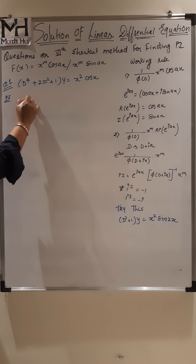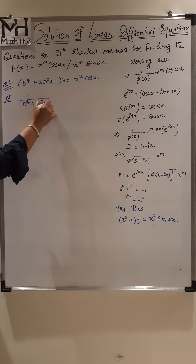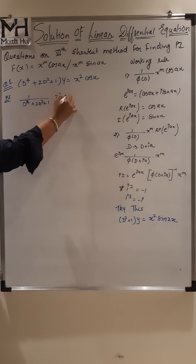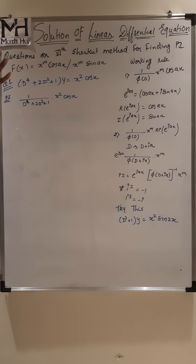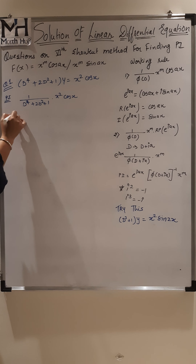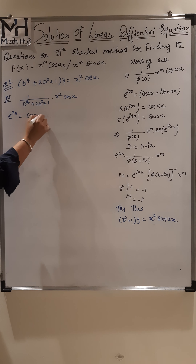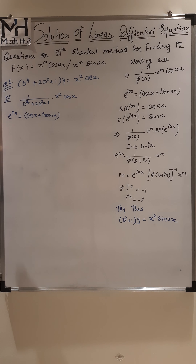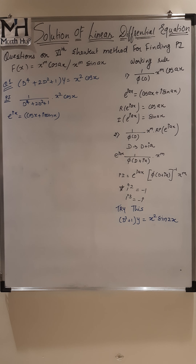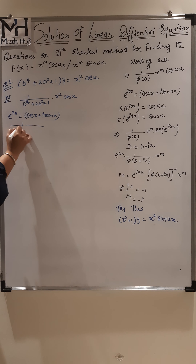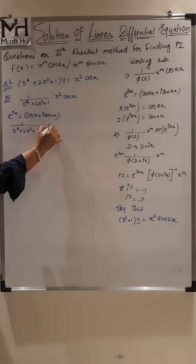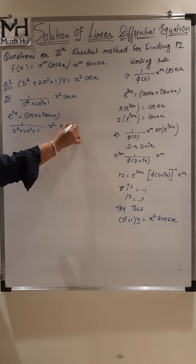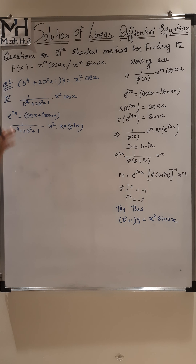We write PI = 1/(D^4 + 2D^2 + 1) of x^2·cos(x). Working rule: convert the cosine function to exponential. So e^(ix) = cos(x) + i·sin(x). We are considering the real part of this whole expression after solving, because cos(x) is the real part of this exponential function. In the next step we write: 1/(D^4 + 2D^2 + 1) of x^2 · [real part of e^(ix)].